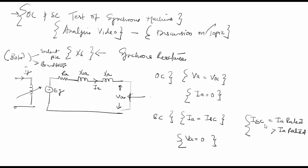This is how you can calculate the parameters based on this. A simple equation could be to say that my EG is equal to VA plus jIA XS. This is a case where my RA is very less than XS and I am ignoring it.